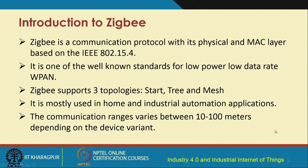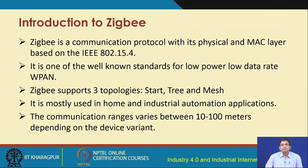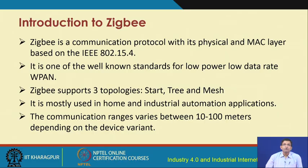Just a recap: Zigbee is a communication protocol used for mid-range communication, and it follows the specification of IEEE 802.15.4. It is one of the very well-known protocols for IoT, whether for home-based or industry-based applications. Zigbee is very popular for low data rate, low power communication in wireless personal area networks. Different topologies are supported — star, tree, and mesh — with star and mesh being most common for home and industrial automation. The communication range varies from 10 to 100 meters, and increases further when the receiver and transmitter are in line of sight.